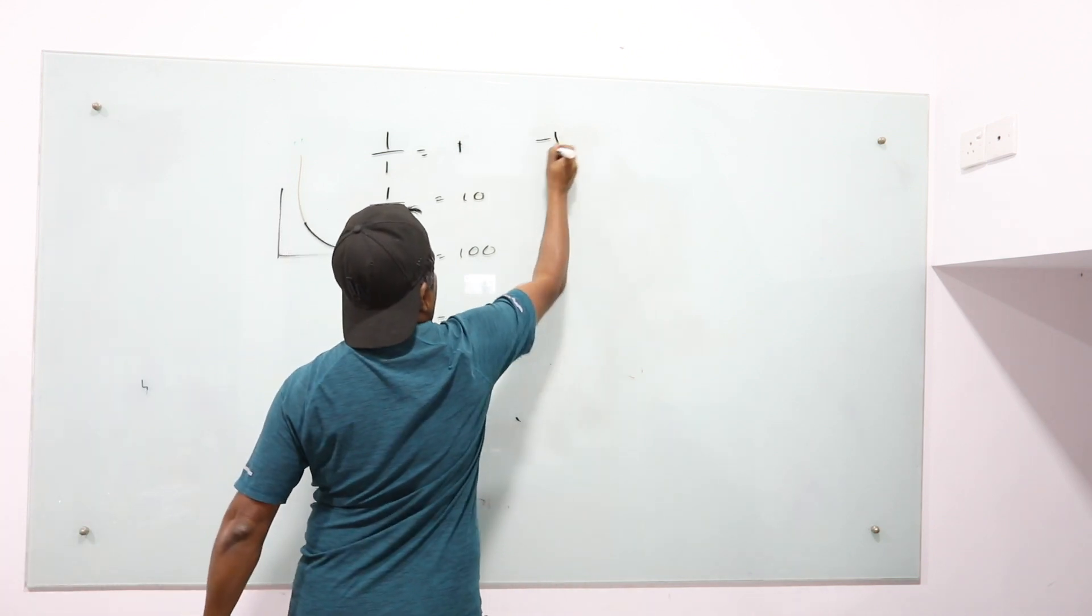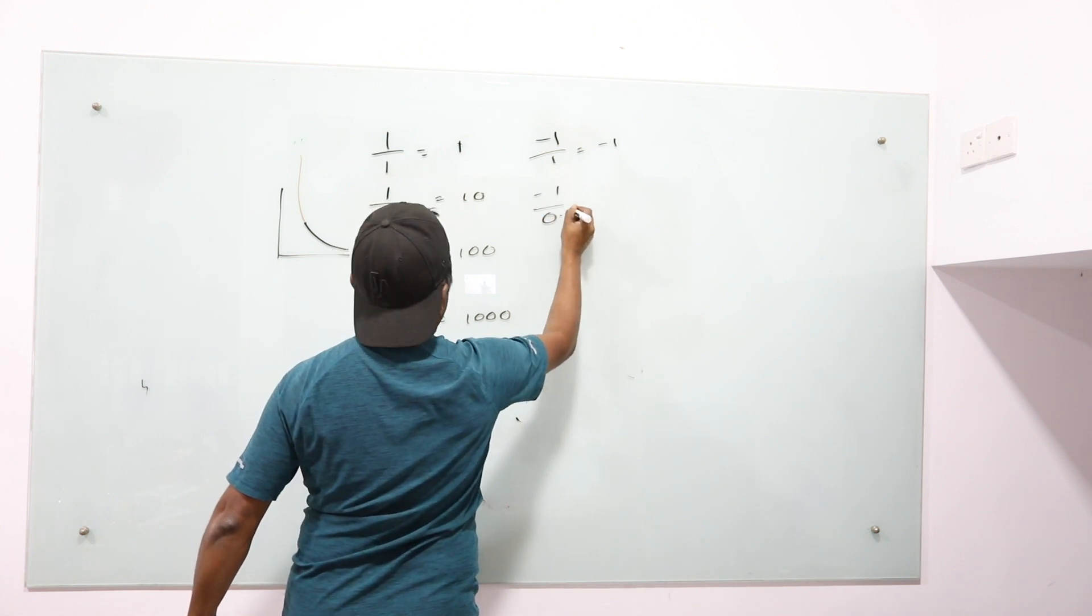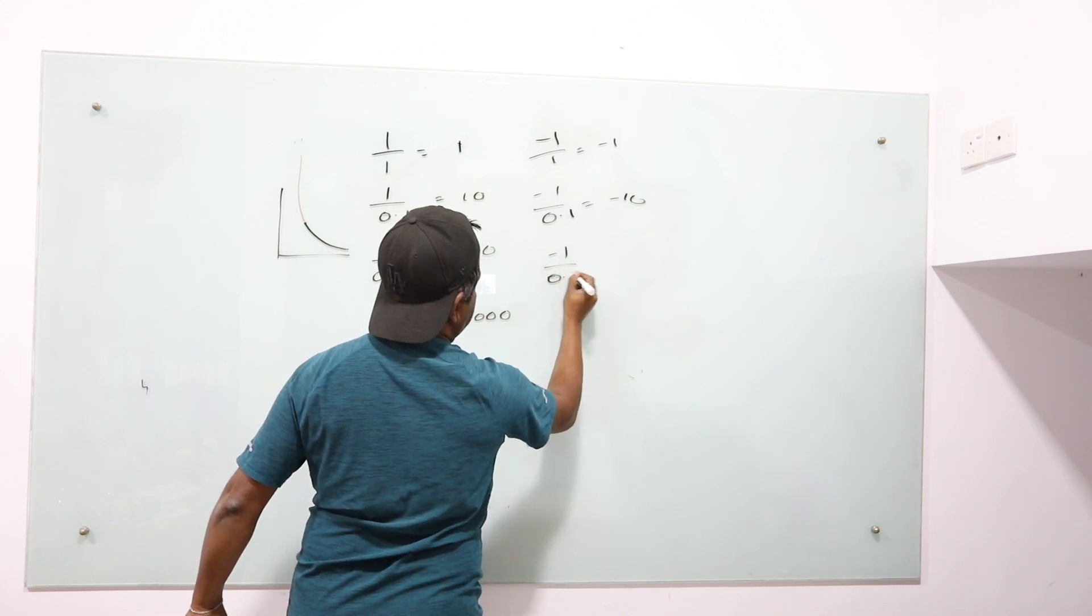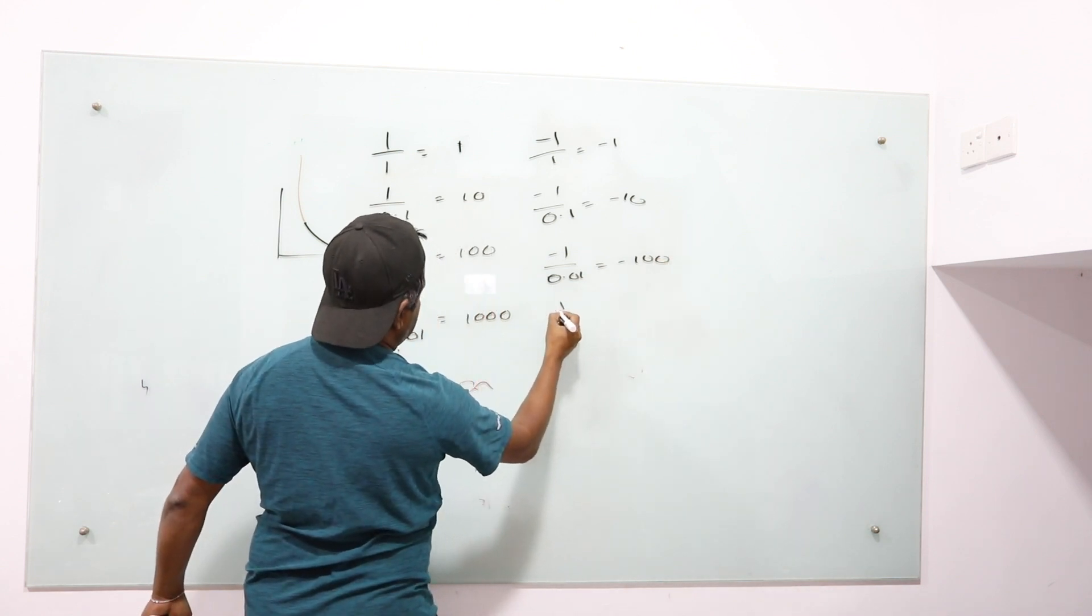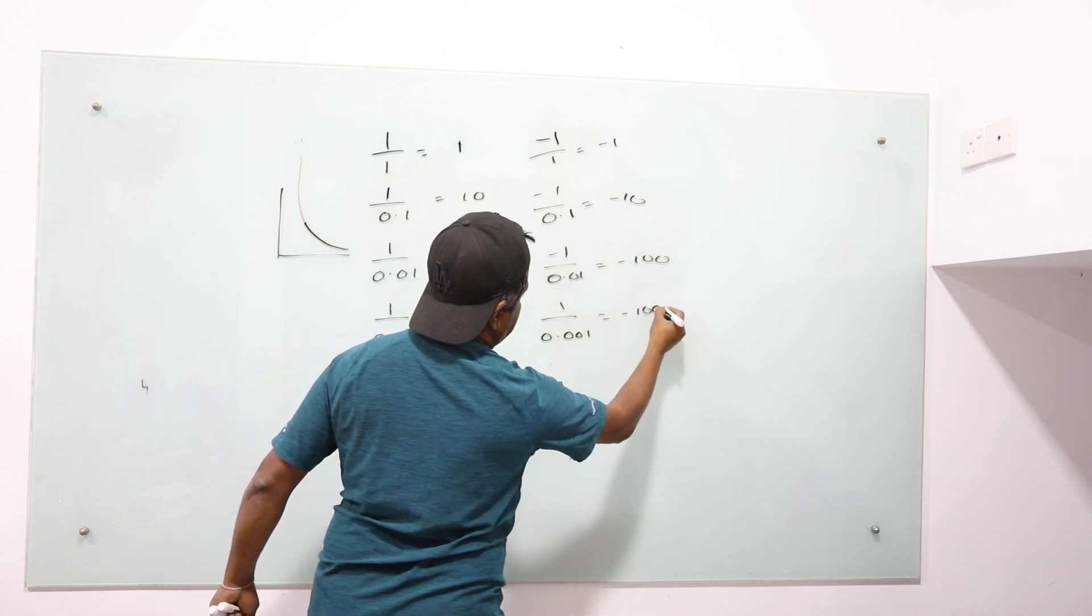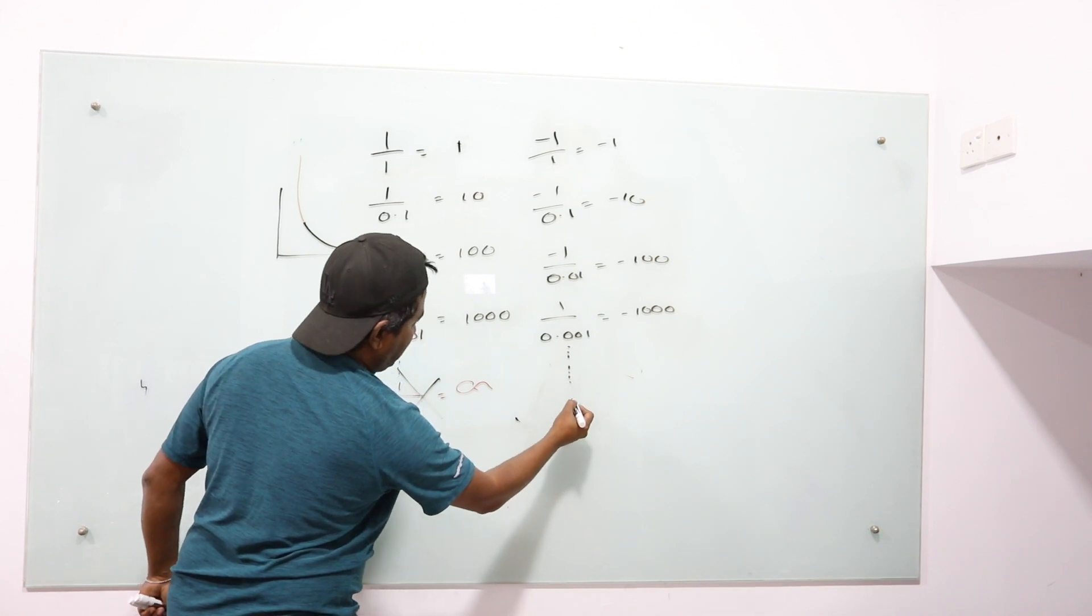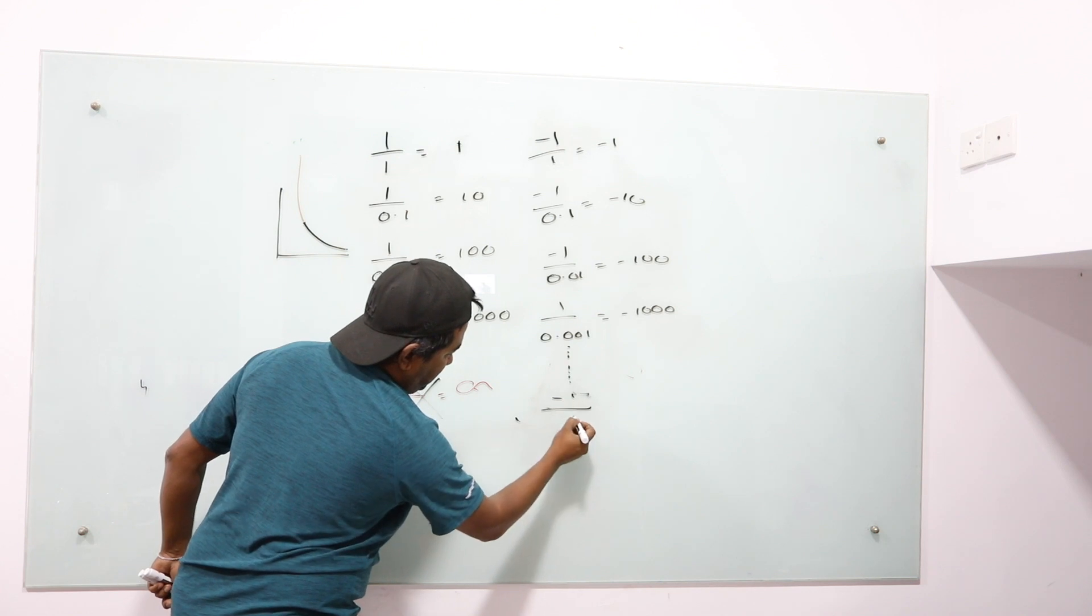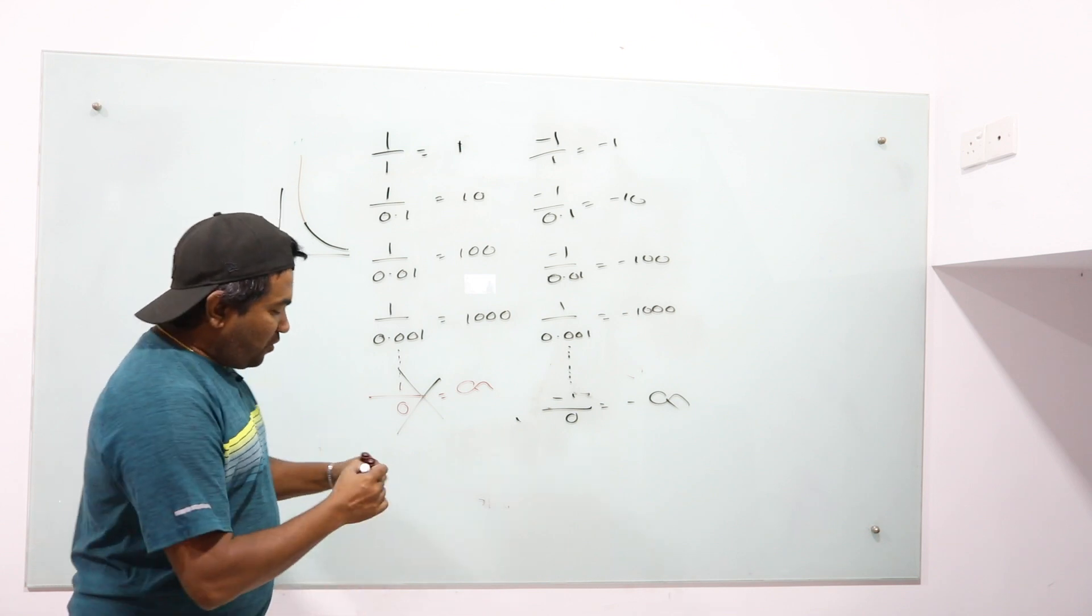If we divide minus 1 by 1, we get minus 1. Minus 1 by 0.1, you get minus 10. Minus 1 by 0.01, you get minus 100. Minus 1 by 0.001, you get minus 1000. So if we go like this, you get divided by 0 is negative infinity or minus infinity.